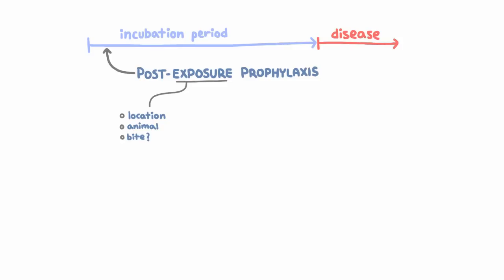But to give you an idea, anytime you've been around a bat and you don't know 100% for sure that you haven't been bitten, because bat bites can actually be really small and hard to notice, that counts as an exposure. If you're bitten by a vaccinated dog in Manhattan and it's a provoked bite, that's not an exposure.